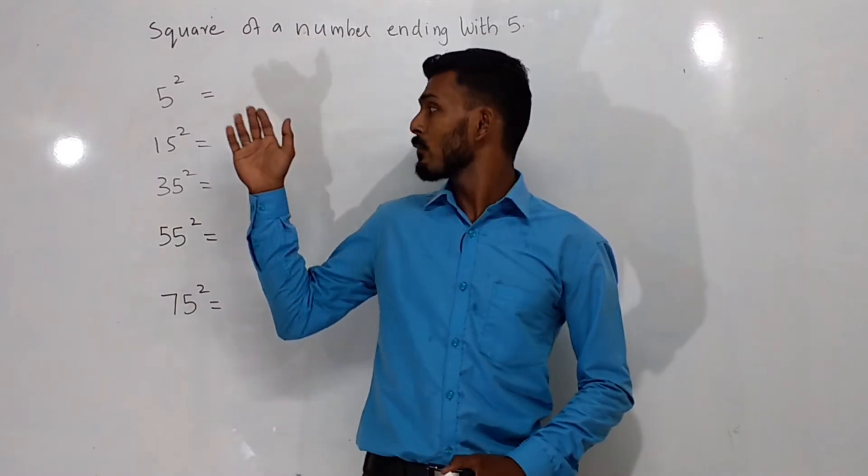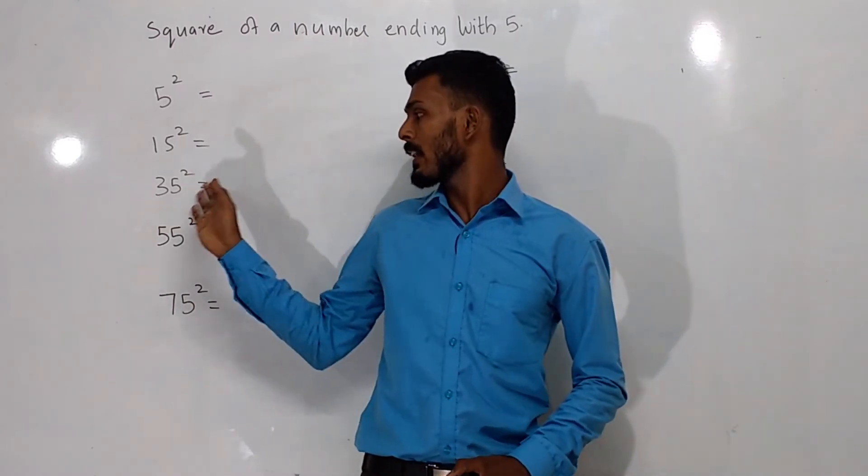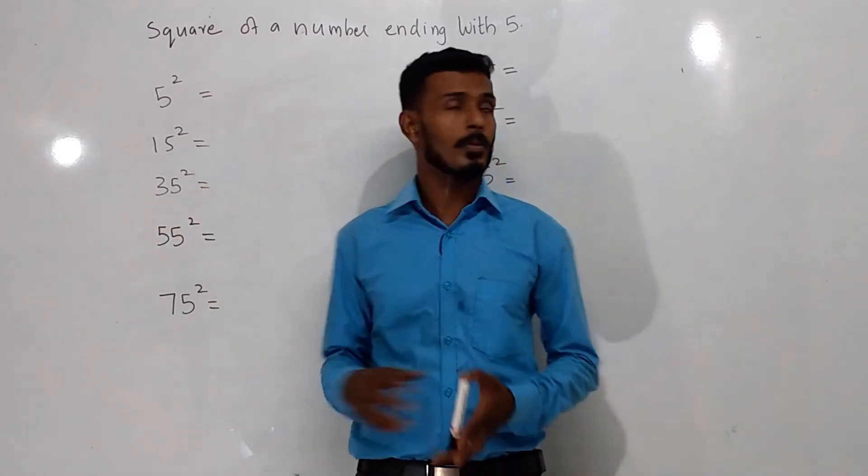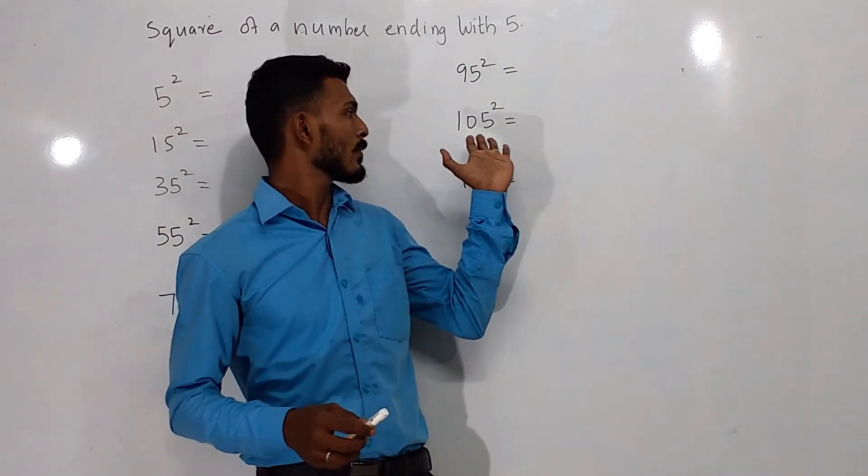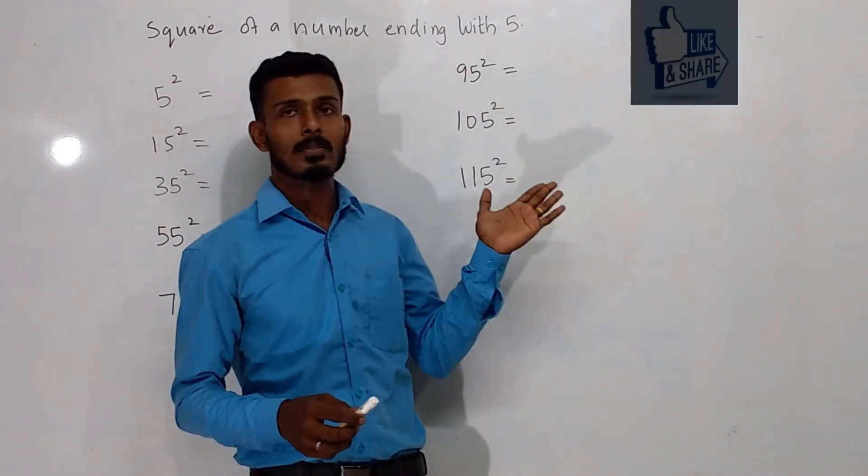On the board I have written 5 square, 15 square, 25 square, 55 square, 75 square, over here 95 square, 105 square, 115 square.